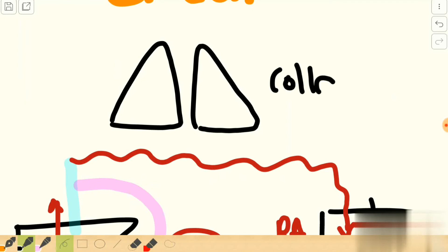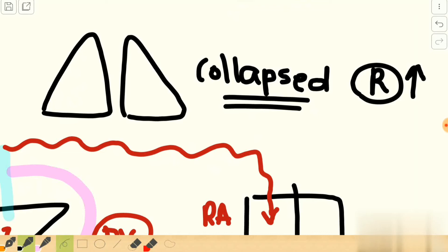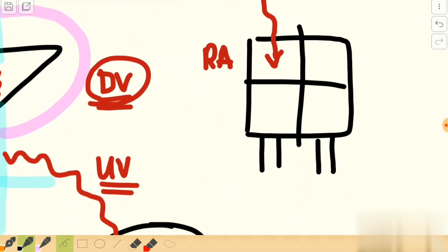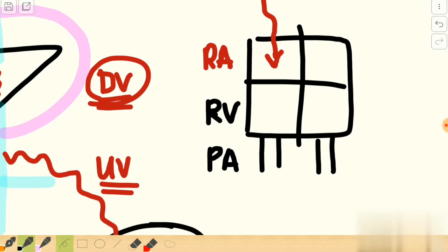Before we continue the journey of this blood, two important points must be considered. First, the fetal lungs are collapsed, so the pulmonary vasculature is an area of high resistance — described as a high resistance, low flow zone. Because resistance in the pulmonary arterial system is very high, the pressure in the pulmonary artery is high, which means the pressure in the right ventricle is high.